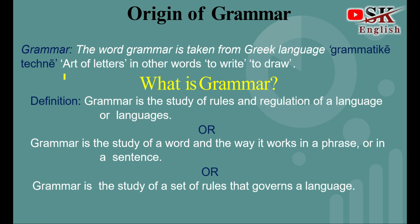Already ہم نے اوپر دیکھا کہ یہ 'art of letters' ہے۔ Our next definition is: grammar is the study of a set of rules that governs the language. Grammar ہمارے پاس ایک set of rules ہے جس کی طرح ہم ایک language کو speak کر سکتے ہیں اور write کر سکتے ہیں۔ So کوئی بھی language جو ہو وہ base کرتی ہے grammar پہ۔